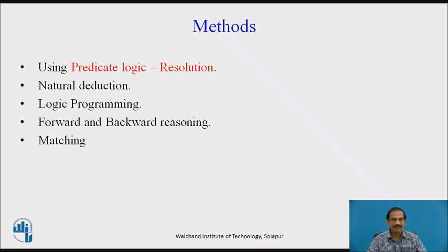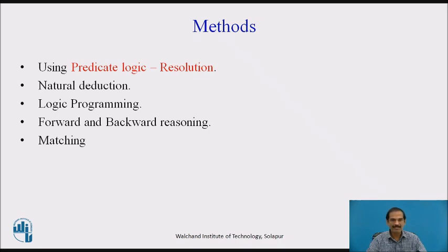Logic programming is another form, where we may use predicate or propositional logic and adopt particular systems to provide our goals. We may go for forward and backward reasoning environments wherein we chain forward till we find a particular error and then backtrack or go backward till we achieve a reasonably good path. The last form is matching of particular aspects, such as matching of predicates or matching of normal forms used in symbolic representations.